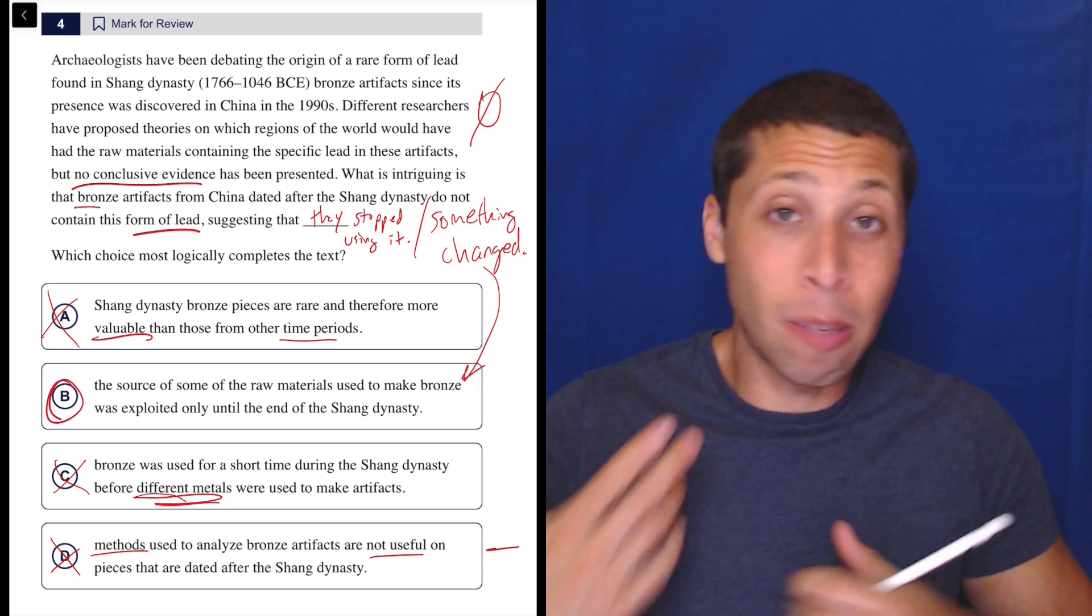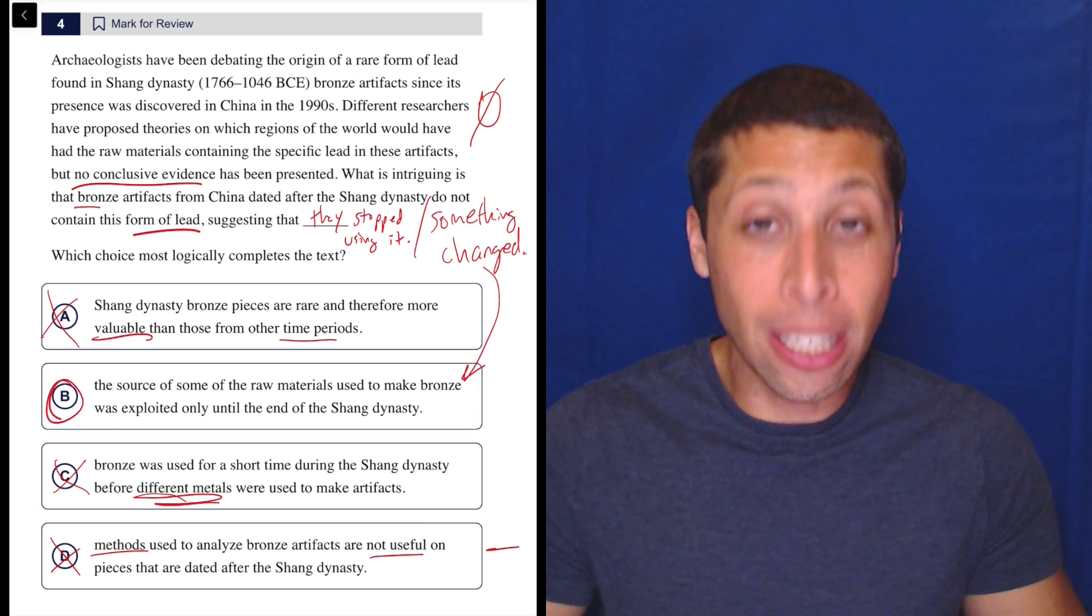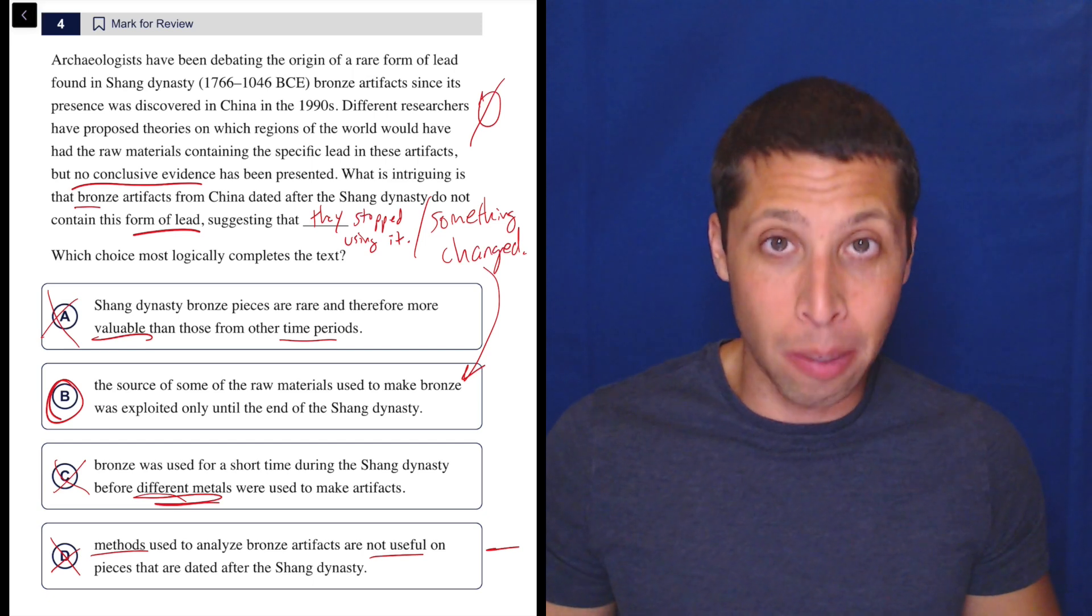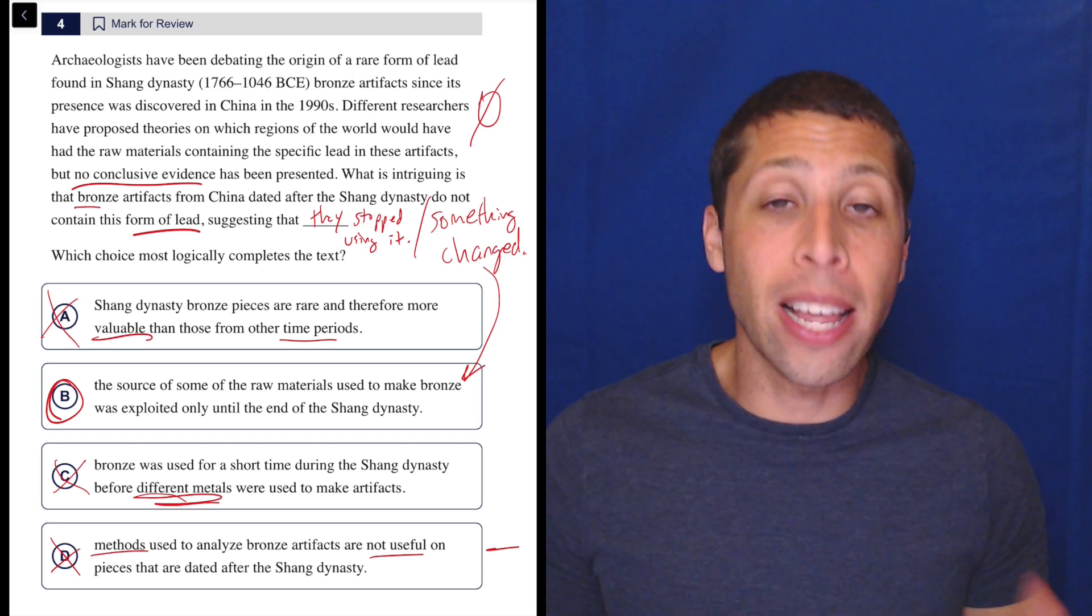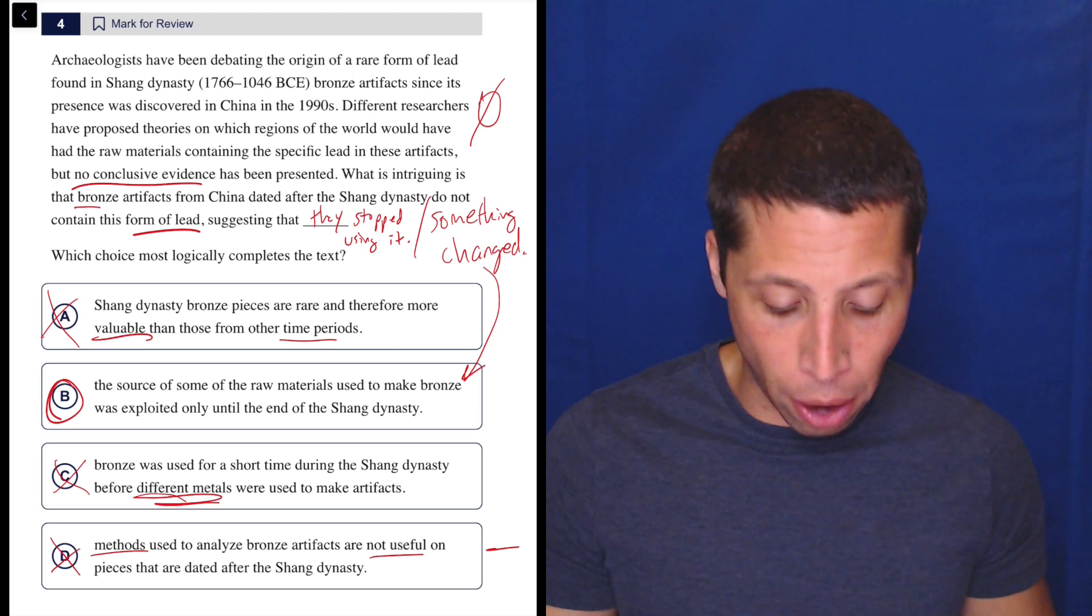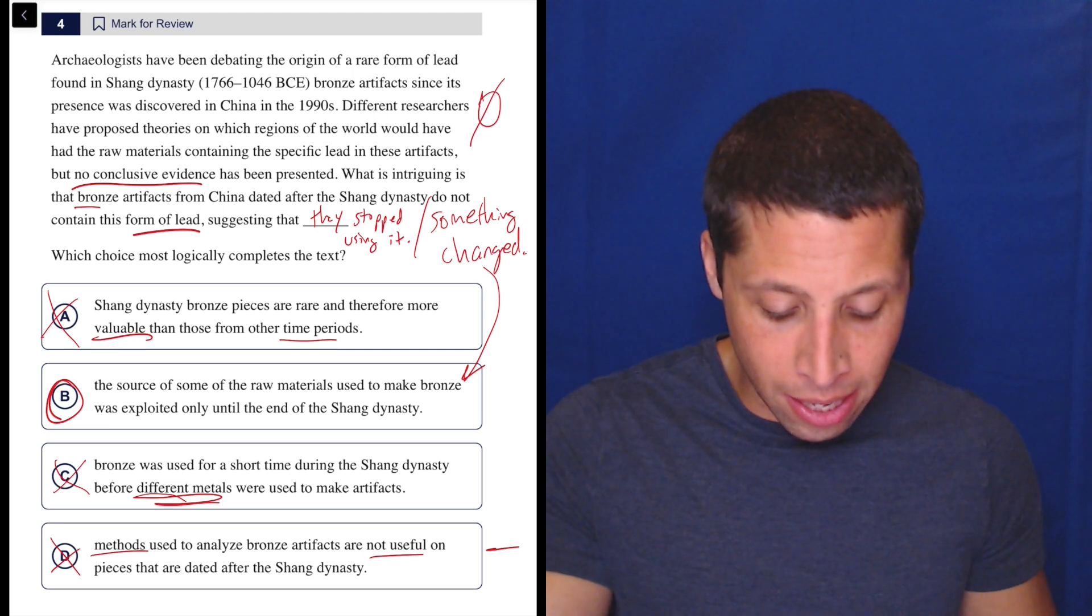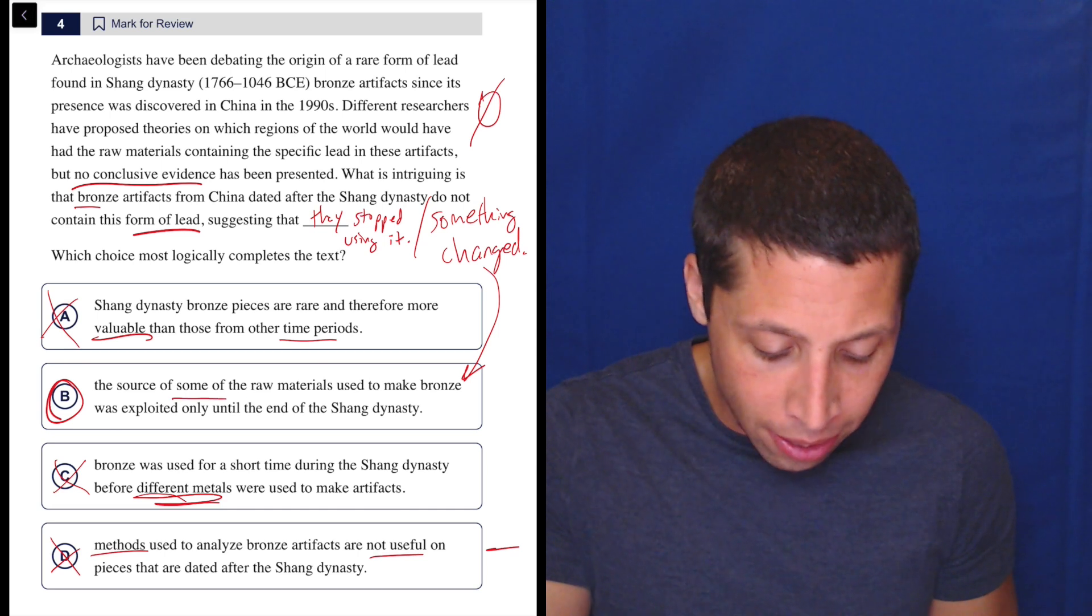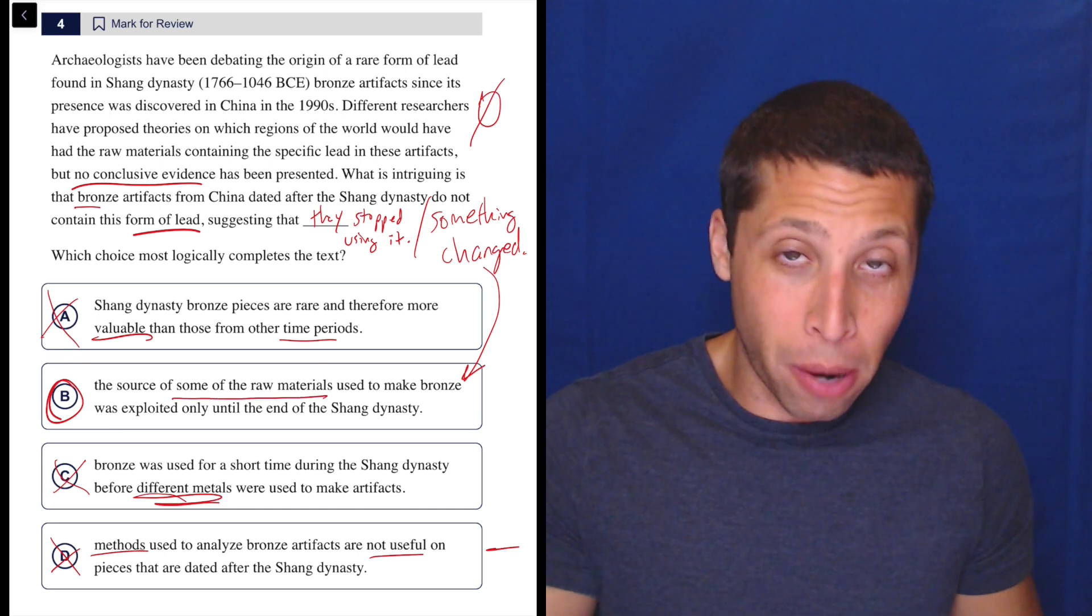So why are we going to have a negative answer choice summarizing a very neutral passage? So yeah, it's B. That's what I expected it to be based on my prediction. But even if you didn't make that prediction, I think you can get to B by eliminating the other choices pretty confidently. They have nothing to do with what we're talking about, whereas B is sticking to the lead. Now, notice what they did.